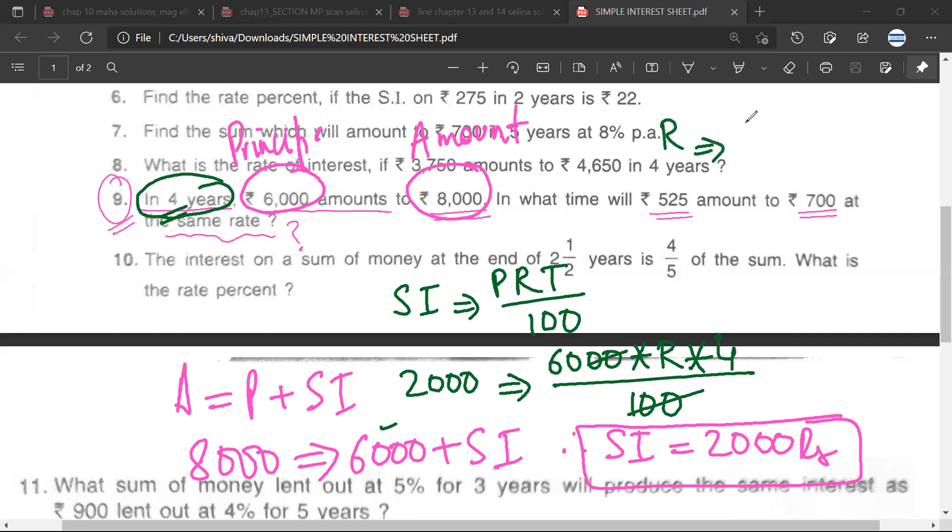We have to find r. So r would be 2,000 upon 4 into 60. Is it correct, Mr. Sarthak? Yes. So we have 25 upon 3 percent as the rate of interest. Is it correct? Yes.